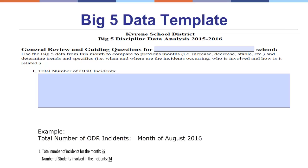The action planning template asks the team to fill in the number of Office Discipline Referrals, or ODRs, that occurred that month. For example, in August, 37 incidents were entered into Synergy, and those incidents came from 24 students. That means 24 students had 37 incidents, which allows me to look deeper into whether students are having one incident a month or more than one. If I had 37 incidents from four students, that tells me I have four students that need some serious intervention.